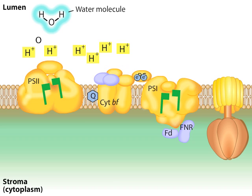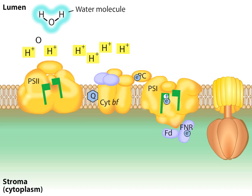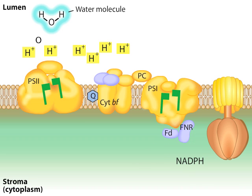In Photosystem I, photon absorption energizes an electron from a reaction center chlorophyll, causing the electron to jump to the next carriers in the chain. The oxidized chlorophyll can be replenished with an electron from plastocyanin. The extra energy boost from photon absorption enables the electrons to be transferred to ferredoxin, and then to ferredoxin NAD reductase, and finally to NADP+. The result is a high-energy electron carrier, NADPH.